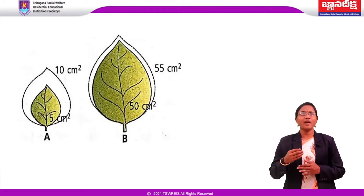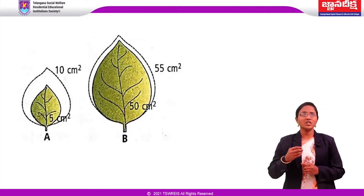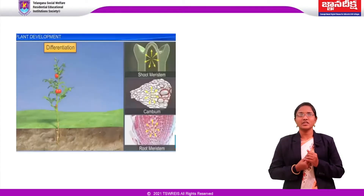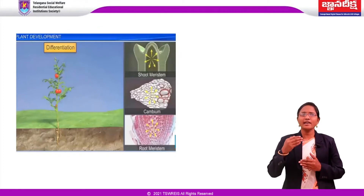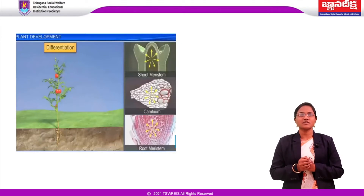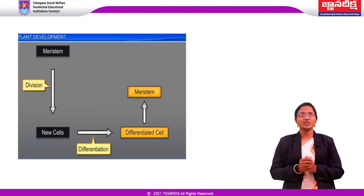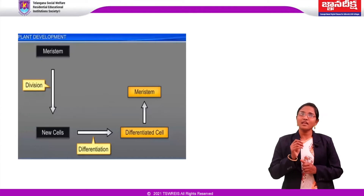In addition, every plant has an optimum temperature for its growth. Environmental signals such as light and gravity also affect certain phases of growth. Differentiation means the cells derived from root and shoot apical meristems and cambium differentiate and mature to perform specific functions. In this process, primary meristematic cells become permanent. During differentiation, cells undergo minor as well as major structural changes both in their cell walls and protoplasm.